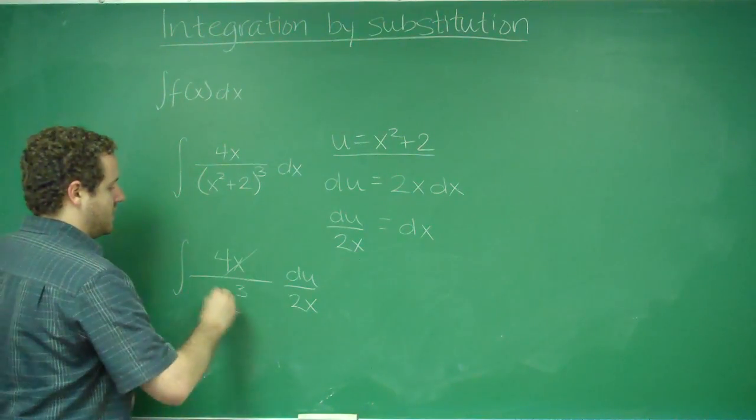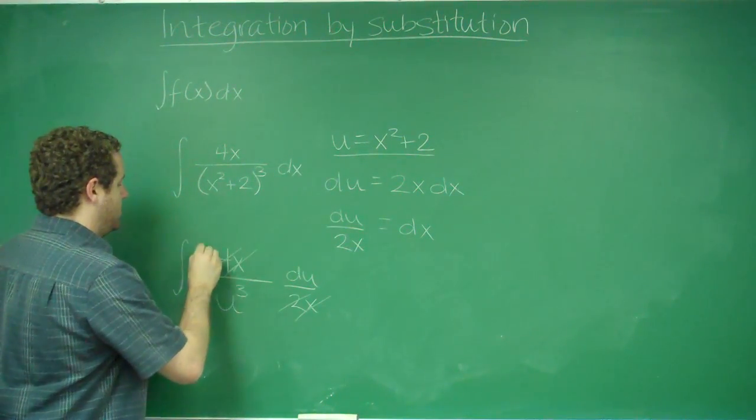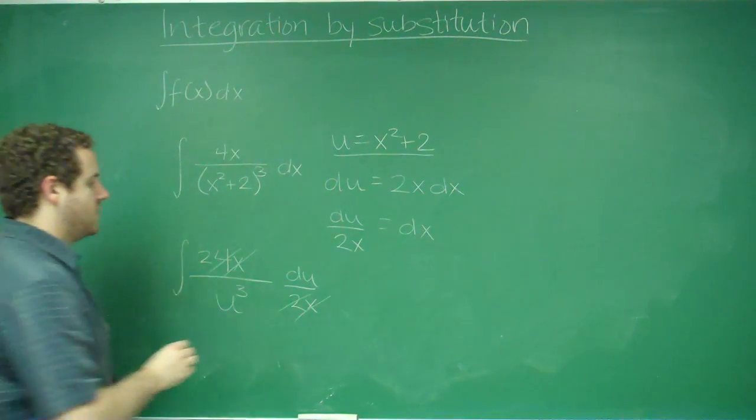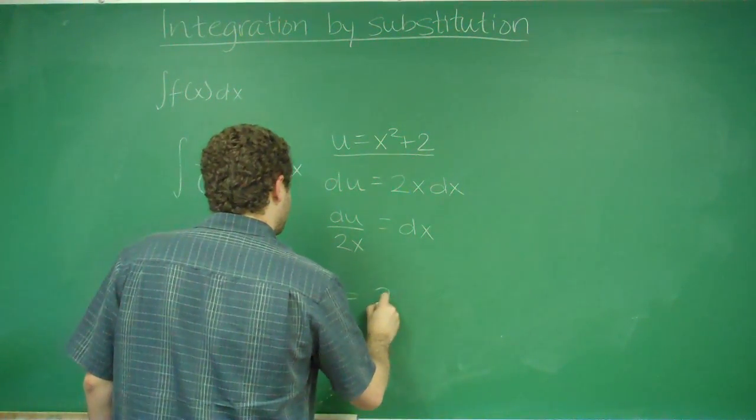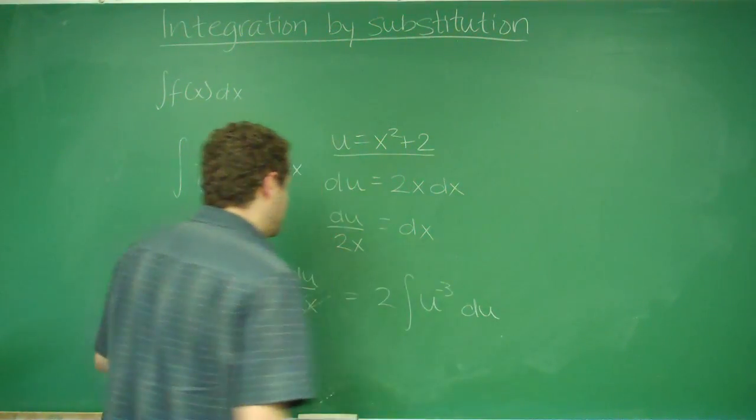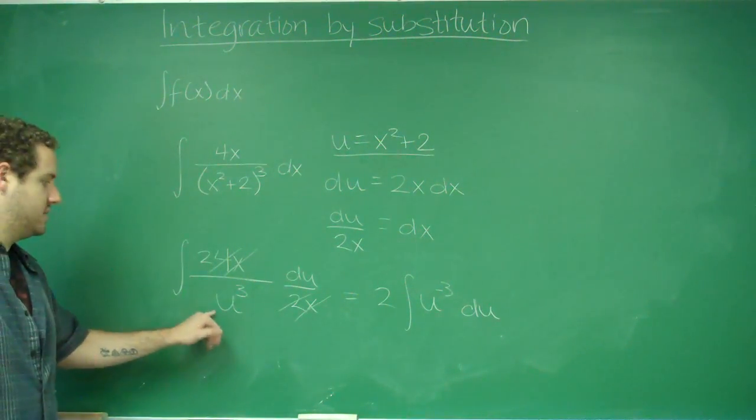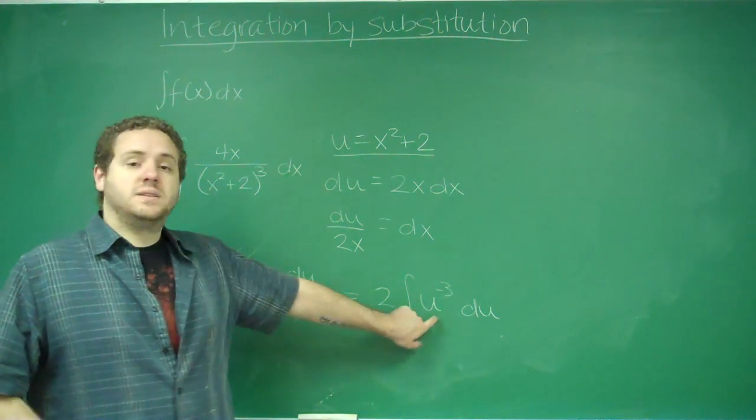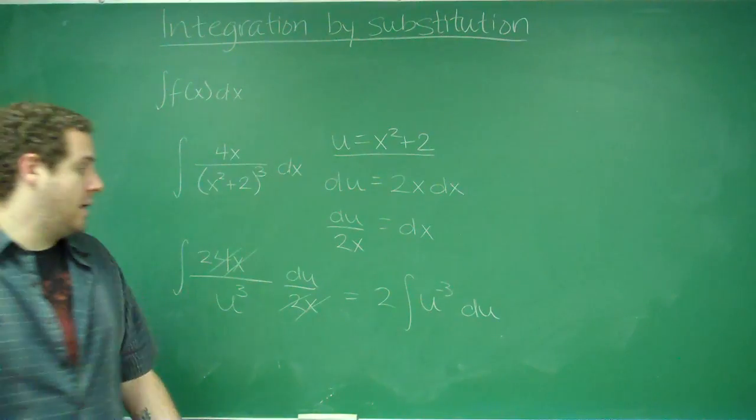You can see here that these x's are going to cancel out. The 2 is going to cancel out the 4 to make it 2. And finally, to write this most simply, we can bring the 2 outside the integral, and we're just integrating u to the negative 3 power, because we have u to the third in the denominator. Now this is a very simple integral that you can just use power rule on.